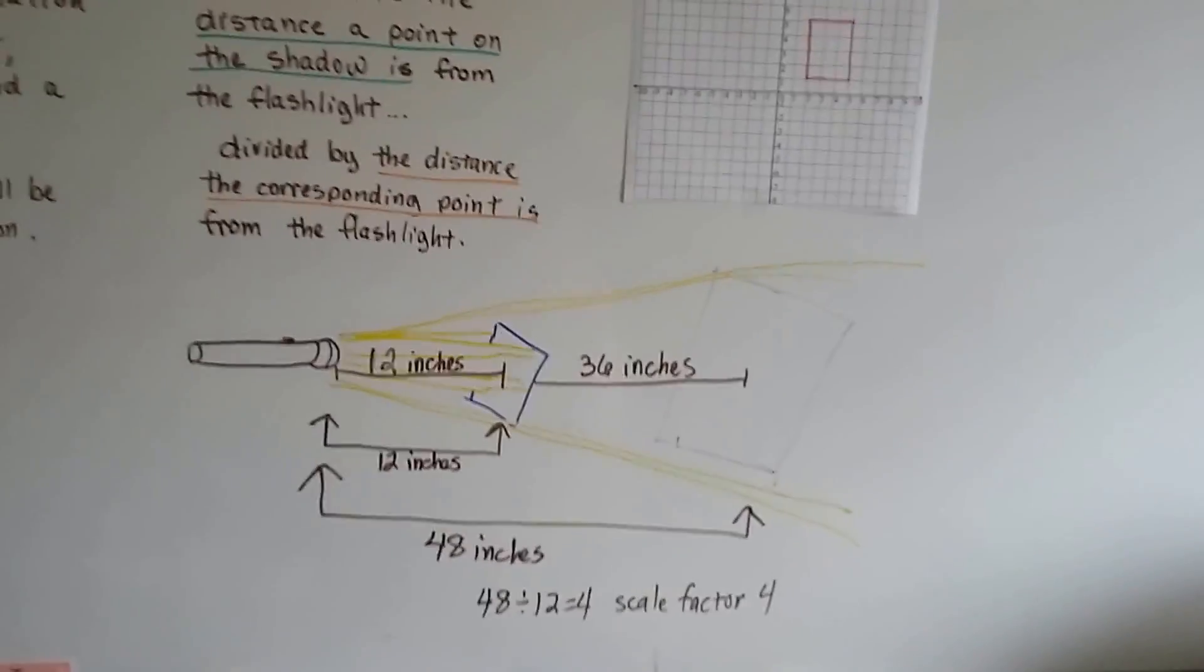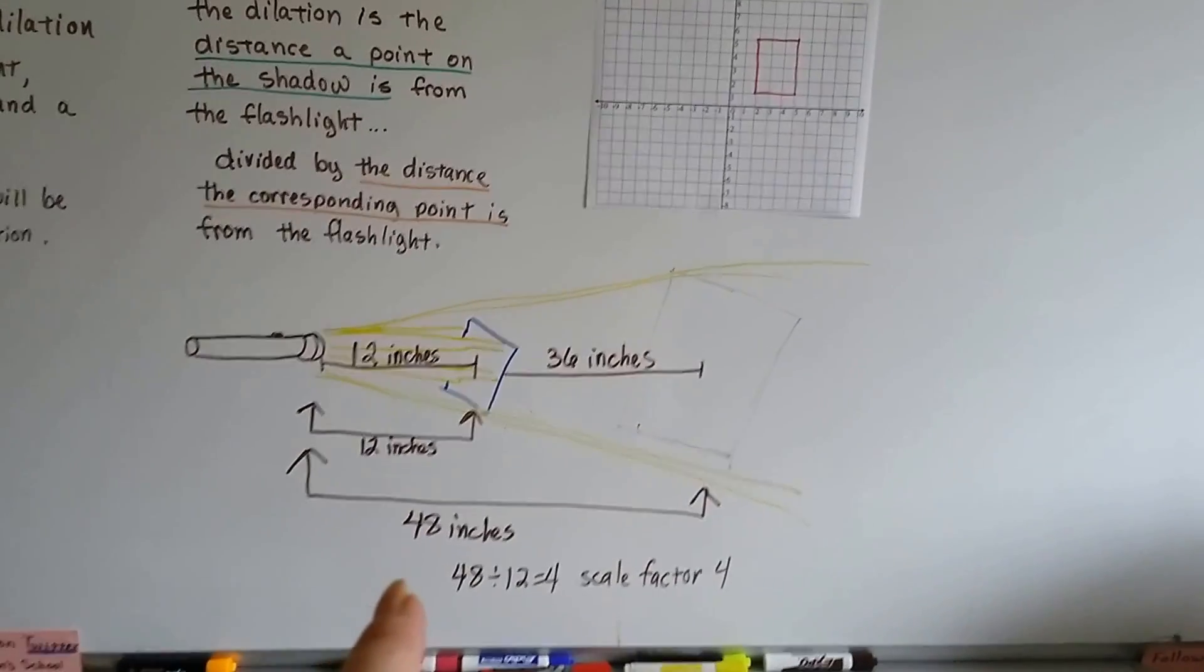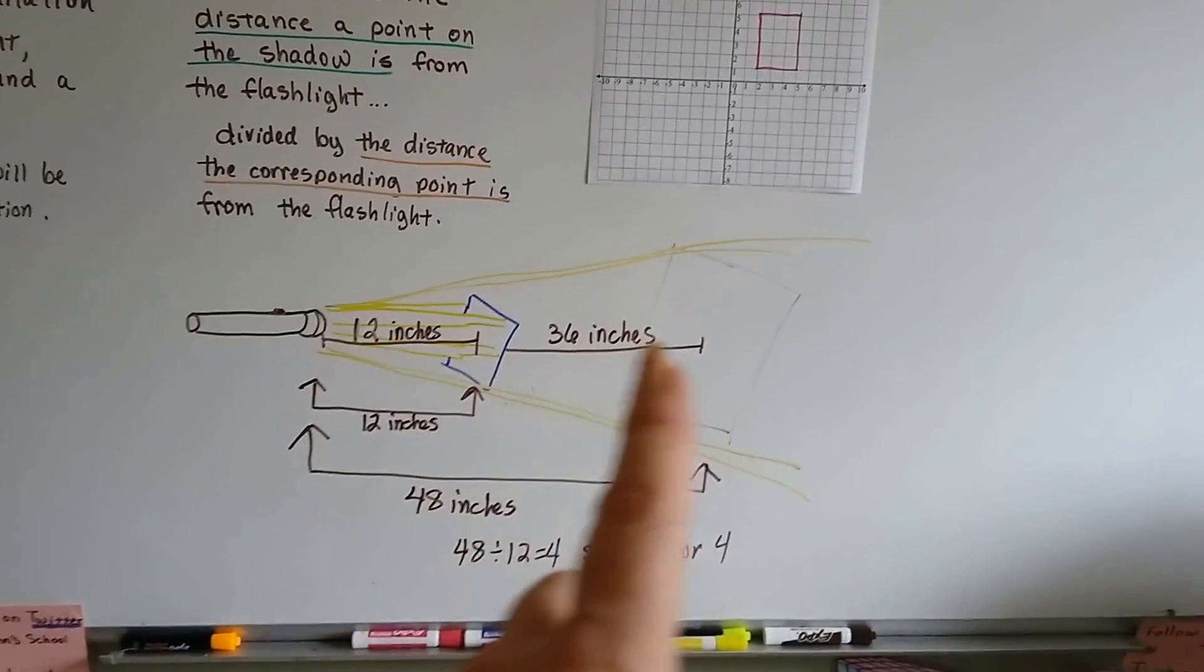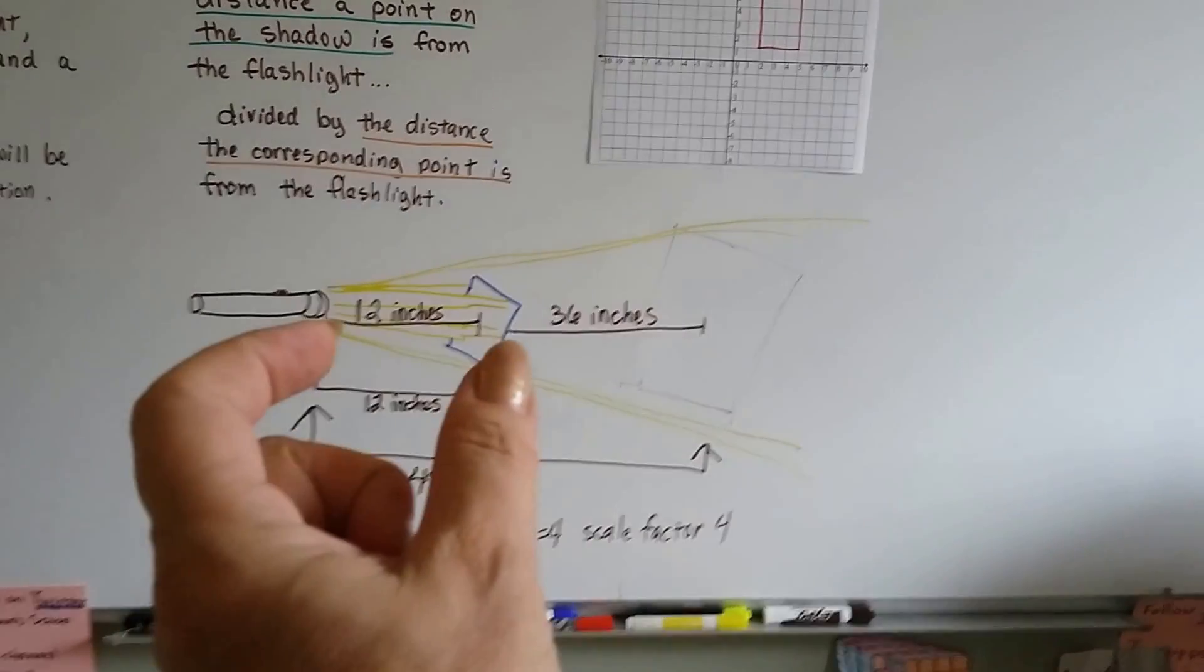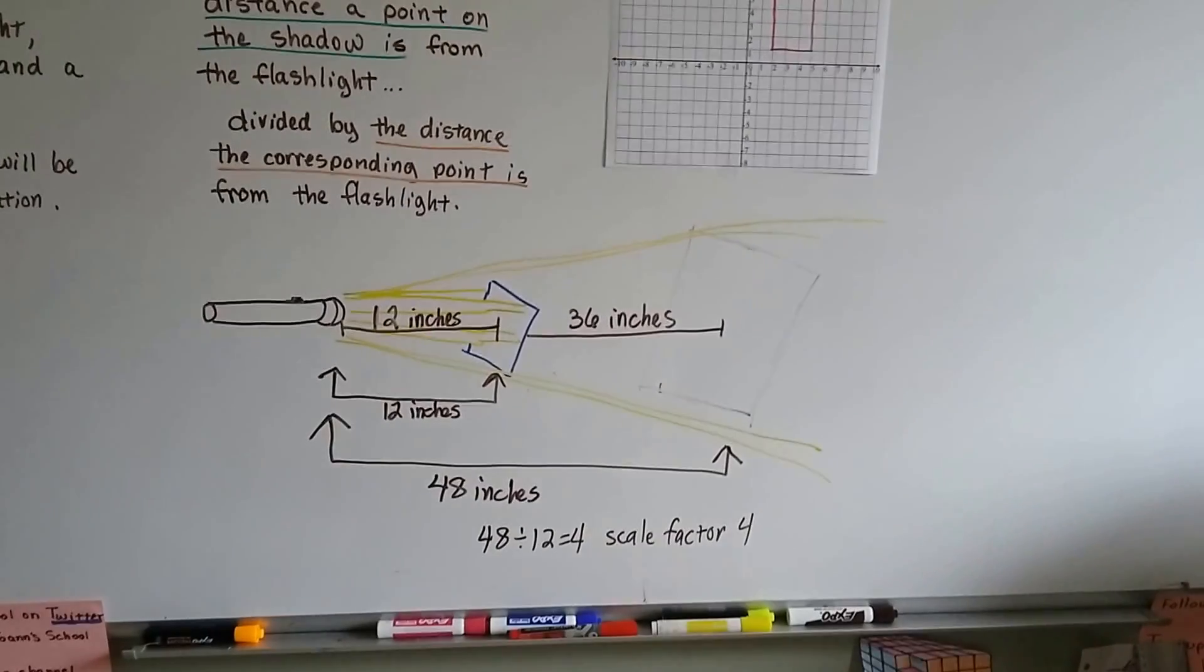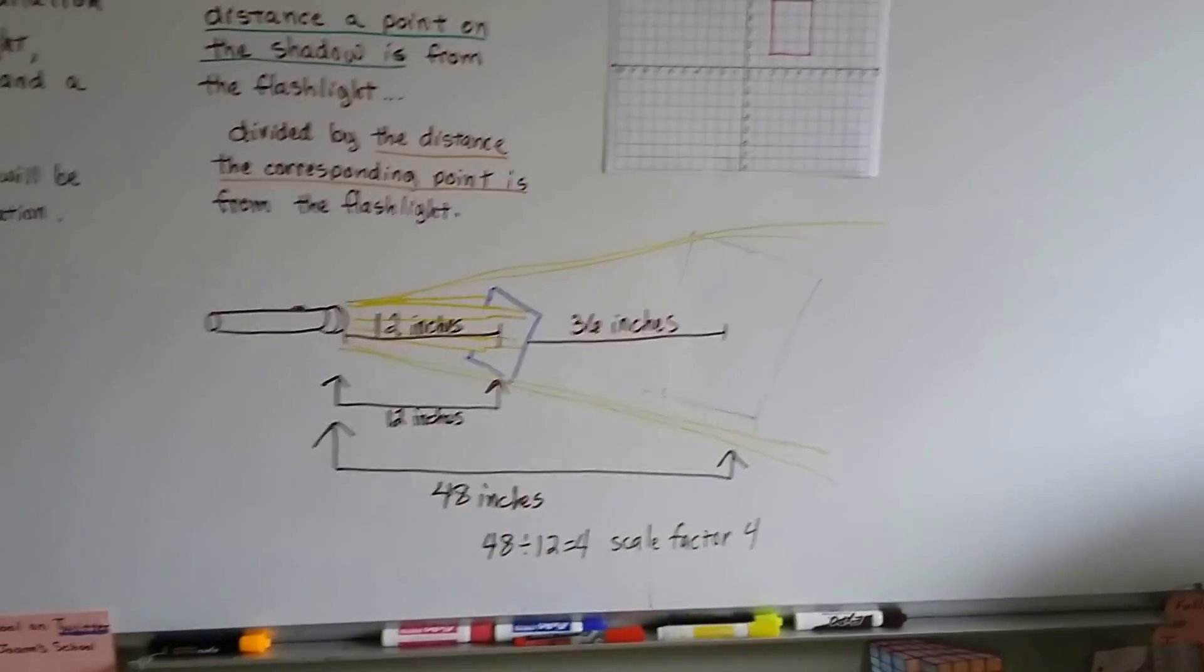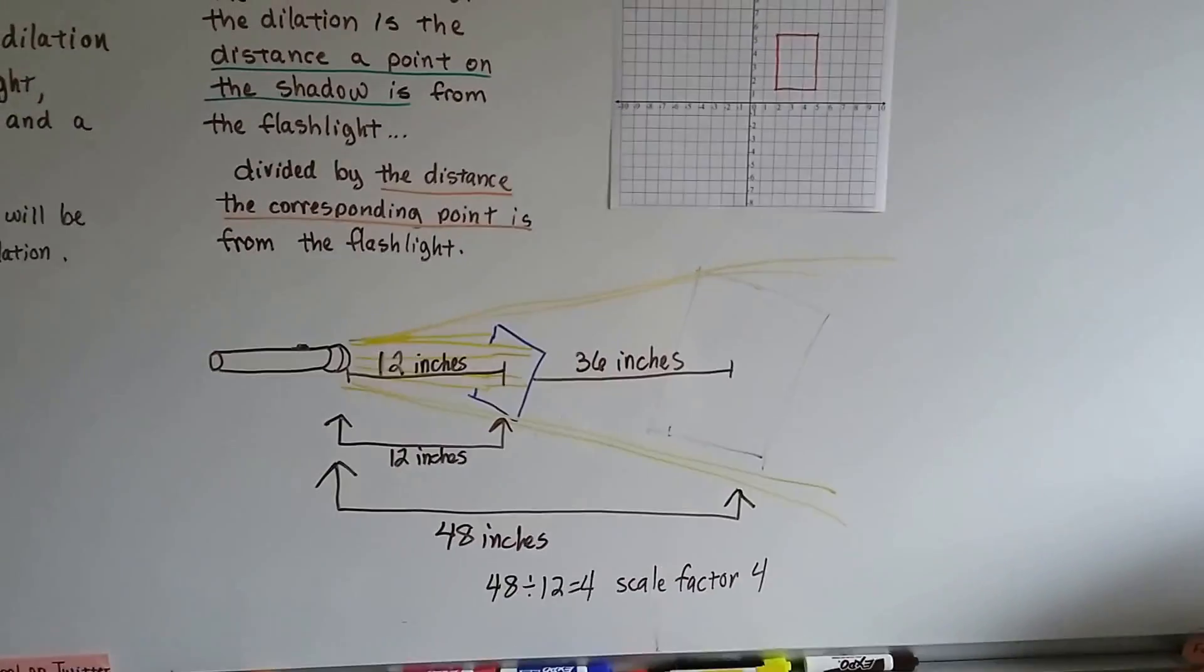So just remember, the way to figure out what the scale factor is—and you can graph it too—is you measure the entire distance to the wall, and you measure the distance your flashlight is from the little shape you're trying to make the shadow with, and you divide the big number by that little smaller number, and you'll have your scale factor.